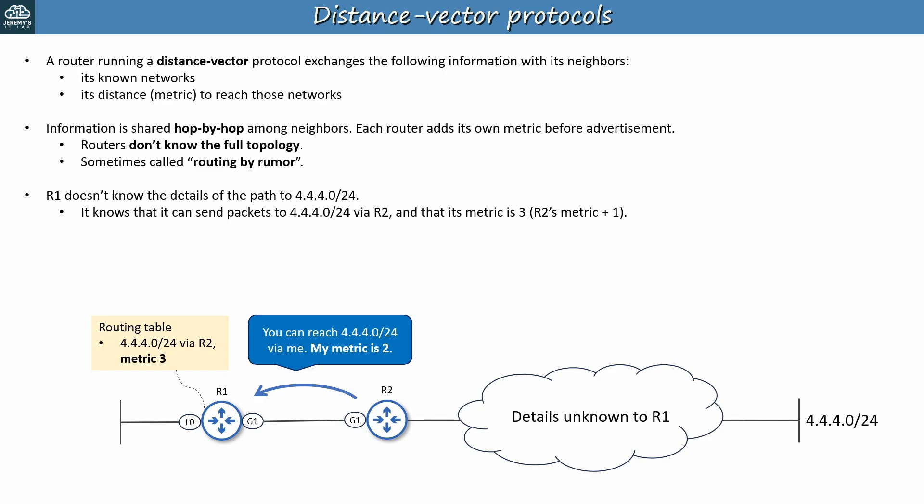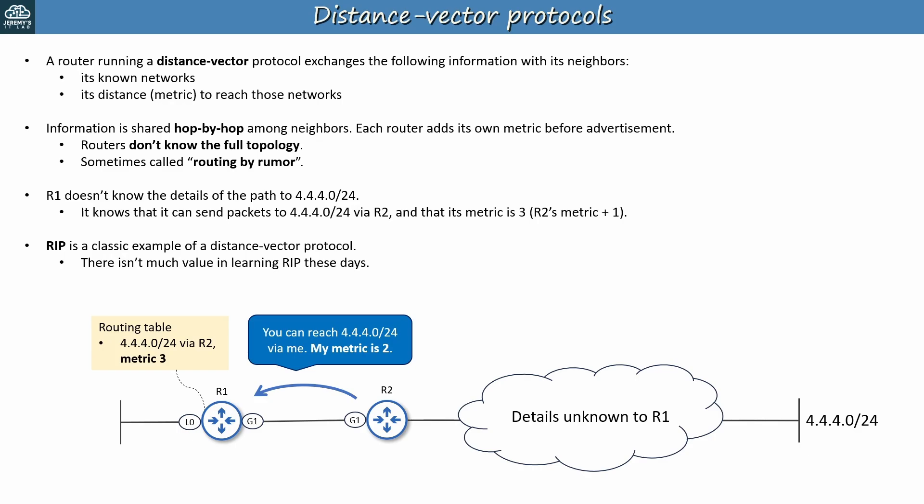Of course, each protocol works differently, but this is how RIP calculates metrics. RIP uses a hop count metric, and adds one each time a route is advertised to another neighbor. RIP is a classic example of a distance vector protocol, mainly used today as a teaching tool and in simple labs. The more common choice is EIGRP, which is sometimes called a hybrid or advanced distance vector protocol, and that's the one we'll focus on in its own section of this course.